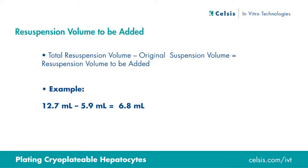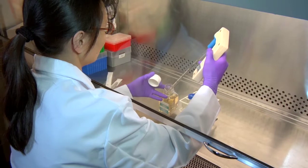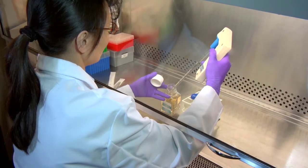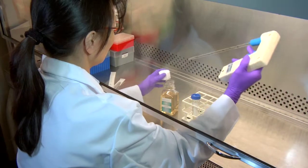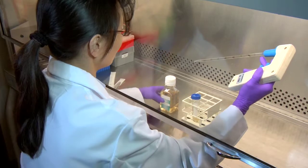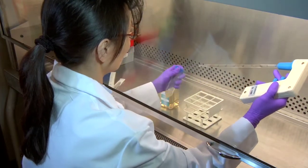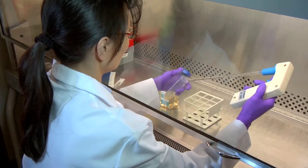Continuing our example, the original suspension volume of 5.9 milliliters must be subtracted from the total resuspension volume of 12.7 milliliters in order to determine how much in vitro growth CP media needs to be added to bring the total volume up to 12.7 milliliters. To the conical tube of hepatocytes, add 6.8 milliliters of in vitro growth CP media. The final cell concentration will now be 0.7 times 10 to the 6 viable cells per milliliter.